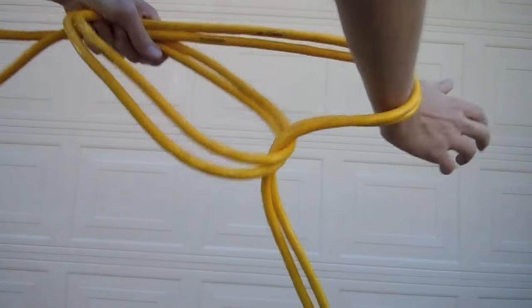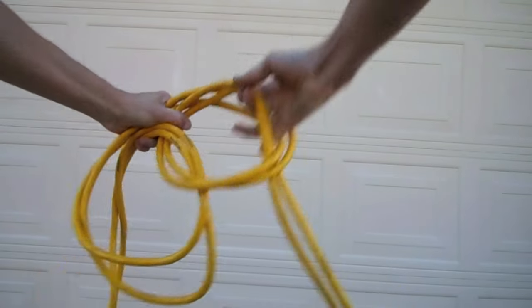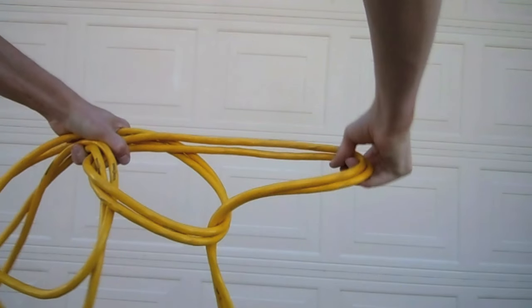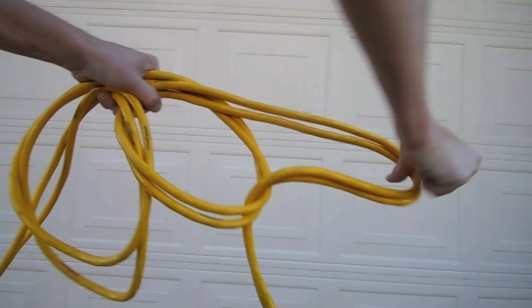Maintaining the cord's position, reach through the C and grab the dangling cord again. Pull it up and work it through until you have created another C shape. You now have a hoop, two coils and a C.